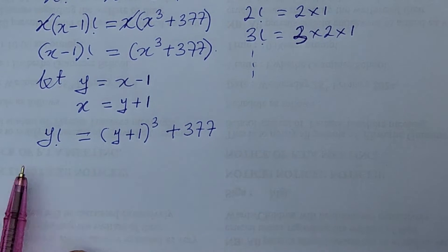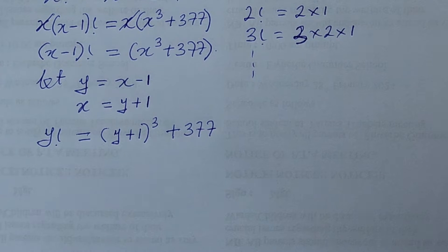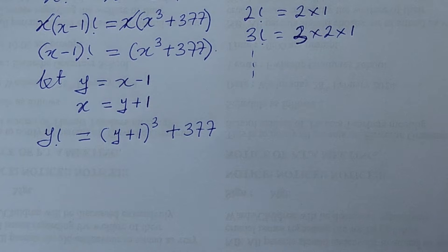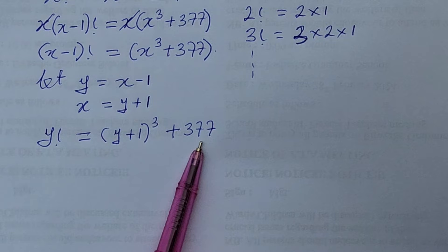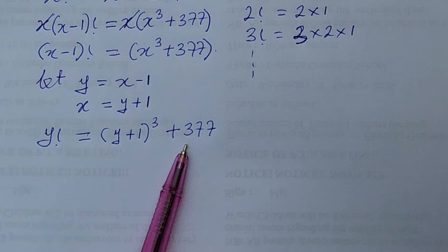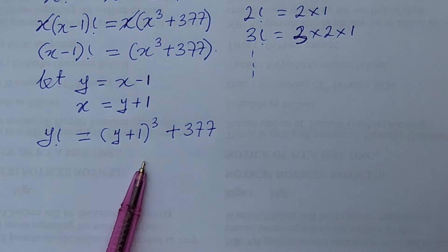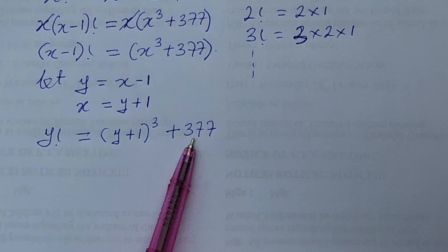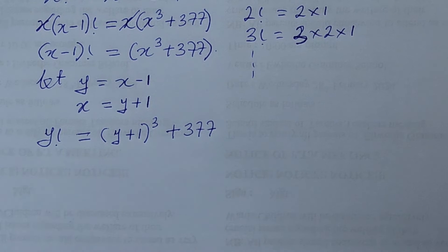Alright so at this point now how do we get the value for y. The only thing we have to do here or the only way out is to use the trial and error method. So now we take a look at this figure here. If we try 2 factorial to 3 to 4 to 5 that will not work out because this figure alone is above 5 factorial.